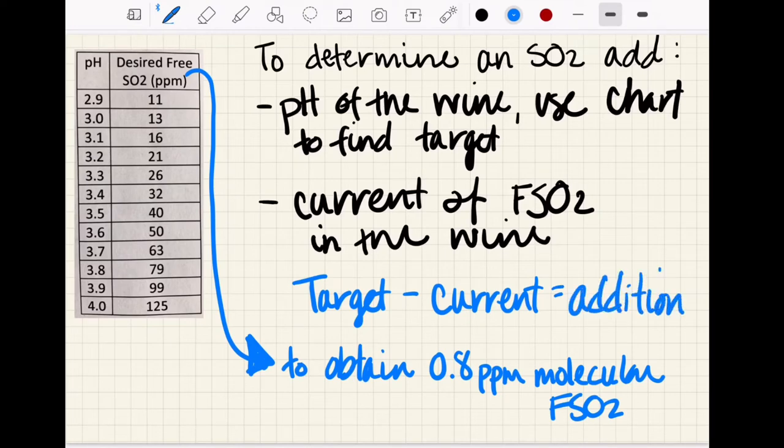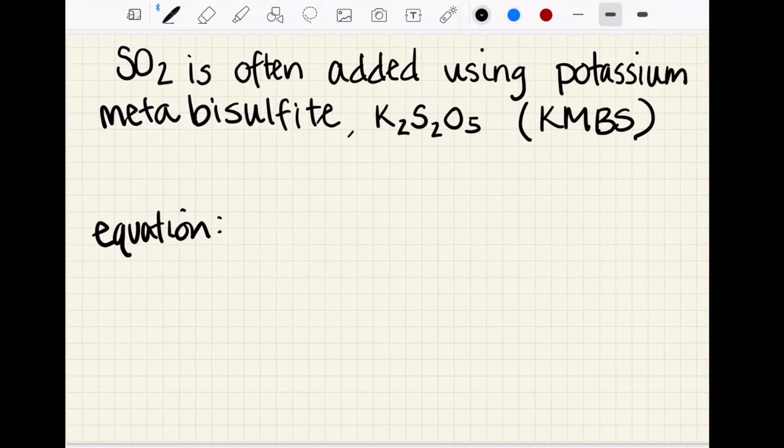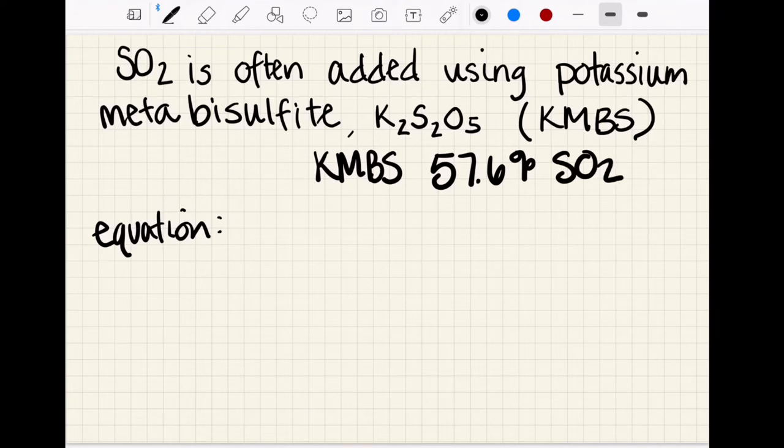Something else we need to keep in mind: SO2 is often added using potassium metabisulfite or KMBS for short. You can see the chemical formula here, K2S2O5. KMBS consists of 57.6 percent SO2, and this is really important because it's not a one-to-one addition. If you add one gram of potassium metabisulfite you're not adding one gram of sulfur dioxide. The SO2 makes up 57.6 percent by weight of the whole compound.